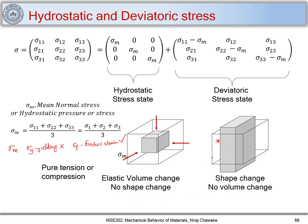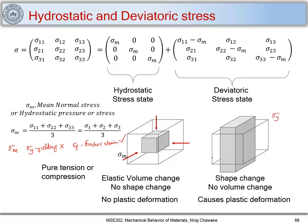Now, for the deviatoric stress state, you can see that the initial cube has changed its shape but there is no volume change. So deviatoric stress state causes a shape change or plastic deformation, but there will not be any volume change. The hydrostatic state is not responsible for any plastic deformation, whereas the deviatoric stress state causes plastic deformation. So sigma_y, the yield stress, will be affected by the deviatoric stress state, sigma_d.